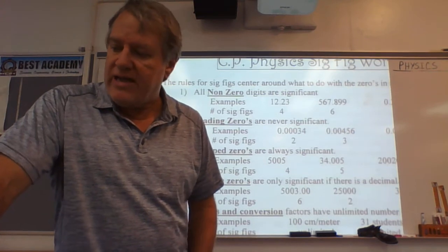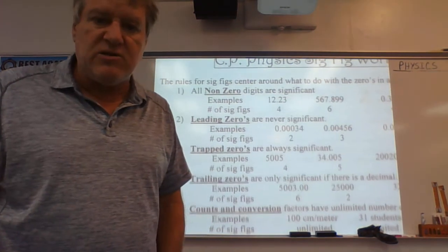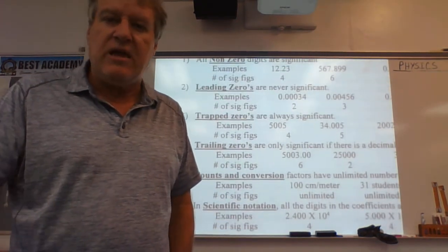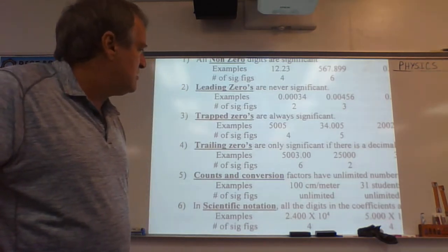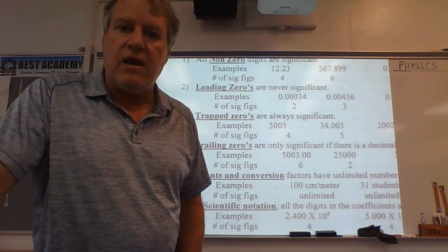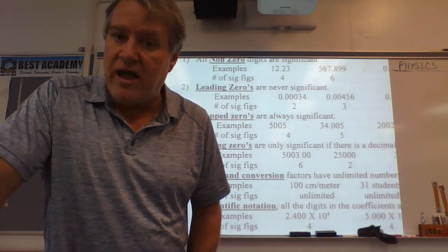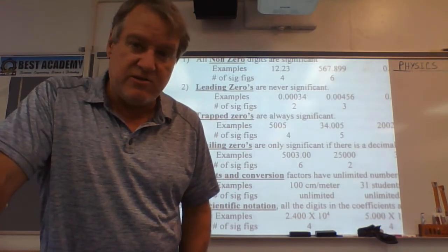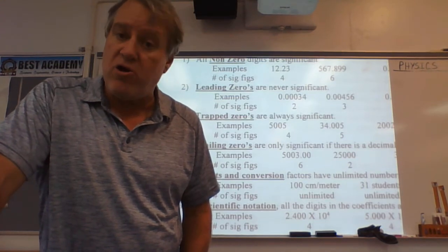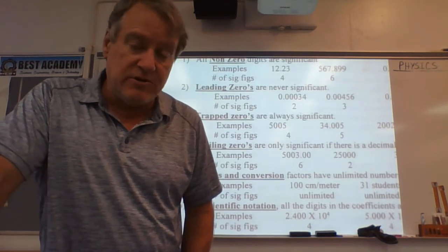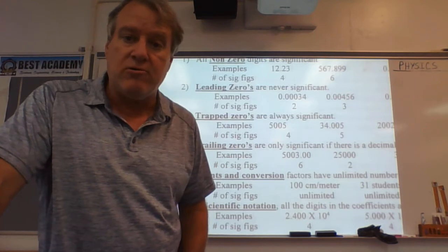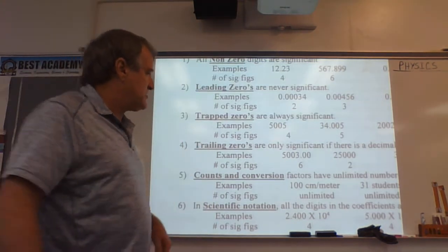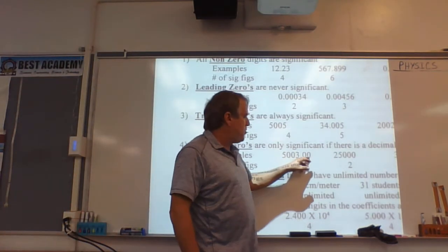So the only one we really got to think about are what happens to the zeros on the end. We call those trailing zeros. They only count if there's a decimal somewhere in the number. It doesn't have to be in front or back of it, just somewhere. If you've got a number with zeros on the end and there's a decimal somewhere in that number, they all count. If there is no decimal, the zeros on the end don't count.